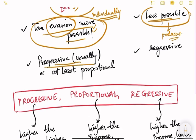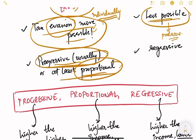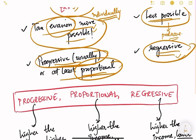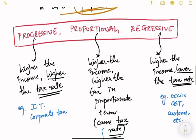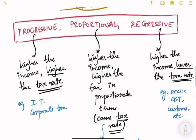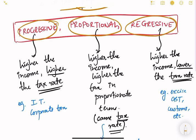Direct taxes are usually progressive or at least proportional in nature, whereas indirect taxes are regressive. Let's understand what the difference between progressive, proportional, and regressive taxation is.